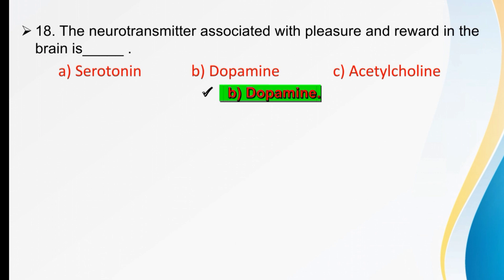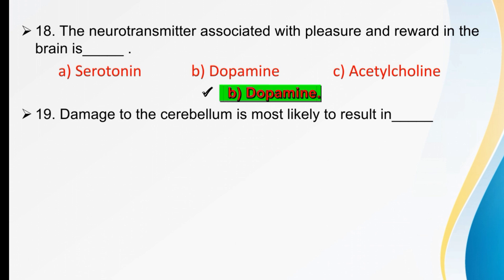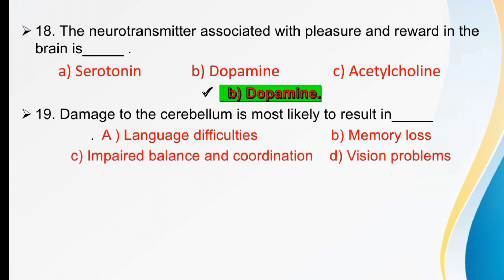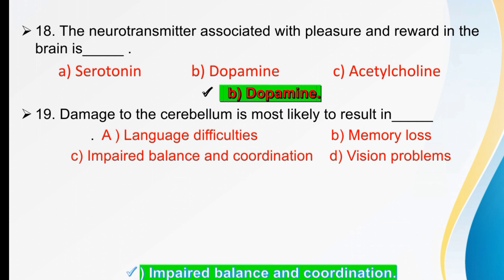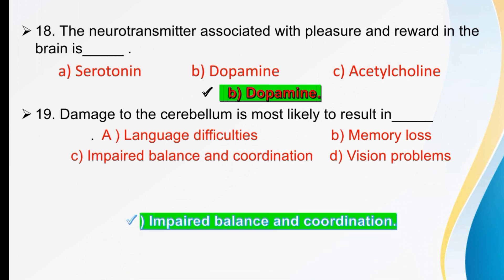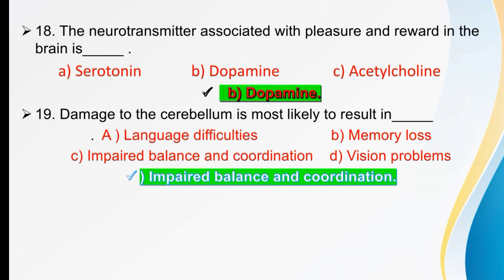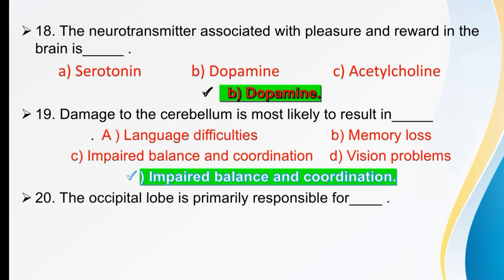The right option is dopamine, B. Damage to the cerebellum is most likely to result in dash. Options are language difficulties, memory loss, impaired balance and coordination, or vision problems. The right option is impaired balance and coordination.